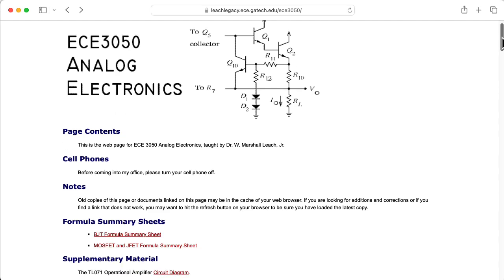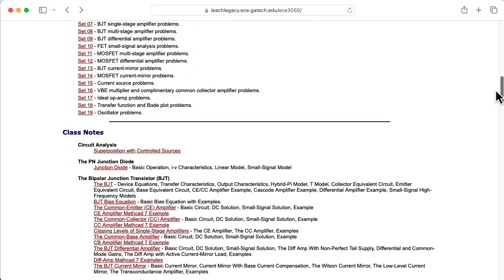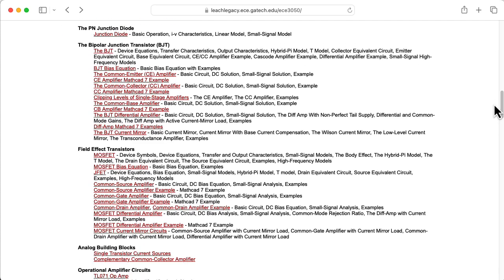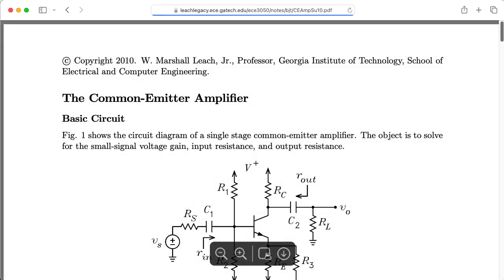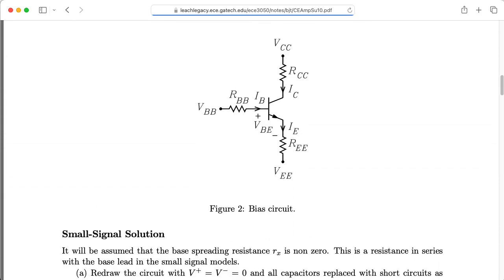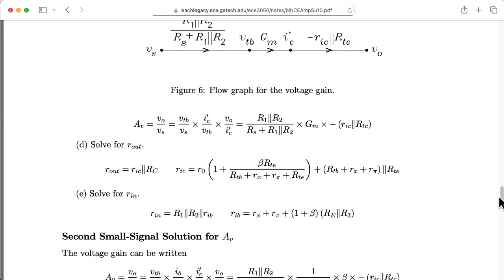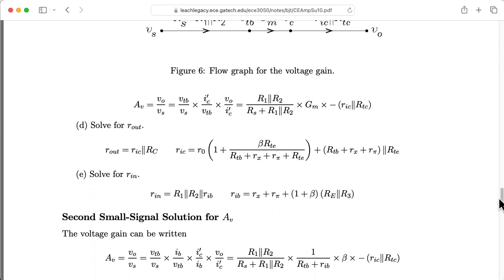Now, you may have noticed that this lecture was quite similar to our lecture on the common emitter amplifier. Let's look at Marshall Leach's notes on the common emitter amplifier. So you can actually take all of these formulas that we computed for the common emitter amplifier and get the associated formulas for the common source amplifier basically by letting alpha go to 1, beta go to infinity, and then making appropriate swaps of the different variables.